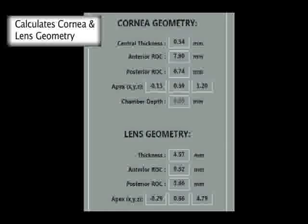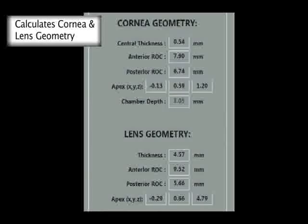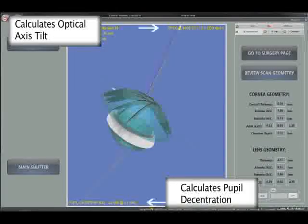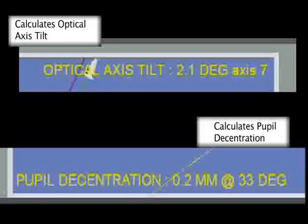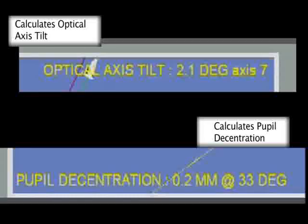Alongside the 3D image, the biometric data is shown for cornea, anterior chamber and lens. Additional information is provided on the degree of lens tilt and the decentration of the pupil within the visible cornea. Lens tilt has importance since it can affect the placement and dimension of the treatment patterns.